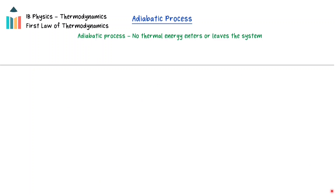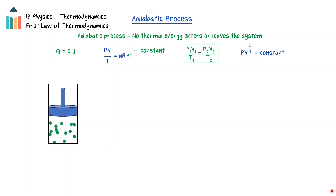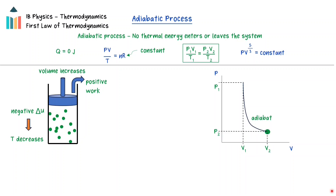The final process is an adiabatic process. In an adiabatic process, thermal energy is not allowed to enter or leave the system. The ratio of pressure times volume to temperature remains constant, and additionally, pressure times volume raised to the power of 5/3 remains constant. In an adiabatic expansion, no thermal energy enters the system; the volume expands, doing positive work on the surroundings, and the internal energy and temperature decrease. On the pressure-volume graph, an adiabatic process results in a curved line called an adiabat, which is steeper than an isotherm. Isothermal lines can be shown on the graph to demonstrate the adiabatic change in temperature.